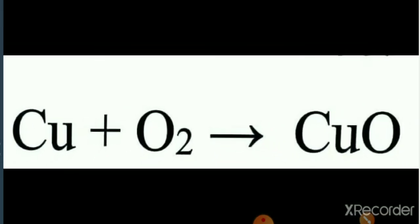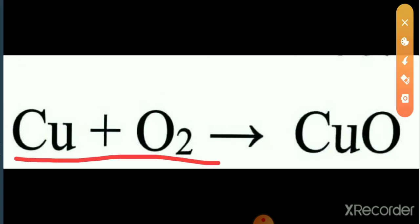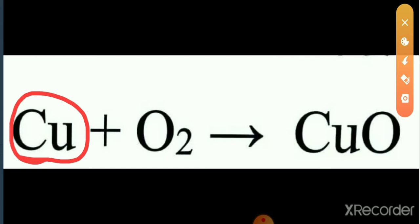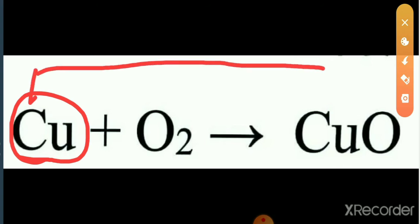All of you look on this equation. In this equation, copper reacts with oxygen to form copper oxide. In the reactant side, there is no oxygen combined with copper. But when copper comes to the product side, one oxygen is combined.